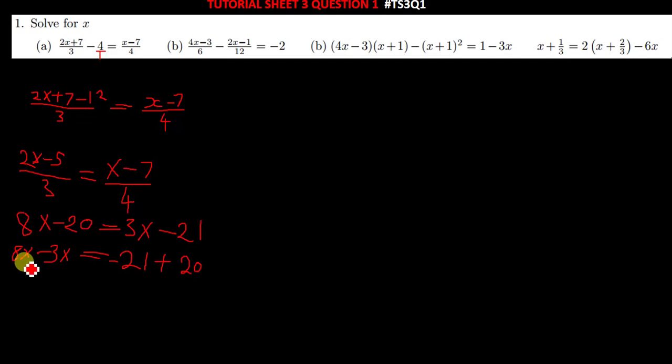Meaning you have 8x minus 3x, you get 5x. And this is equal to negative 1. So to find x, you just divide everything by 5. So you have your negative 1 over 5 like that.